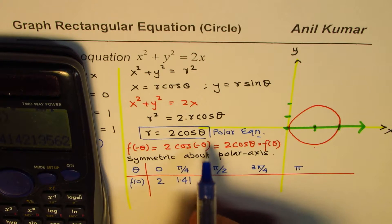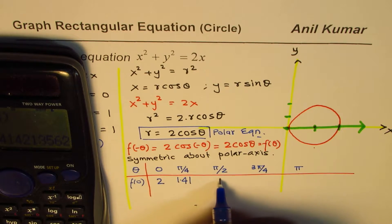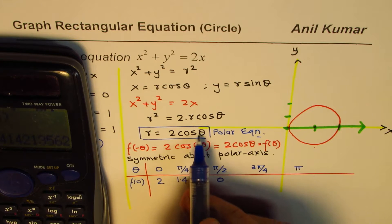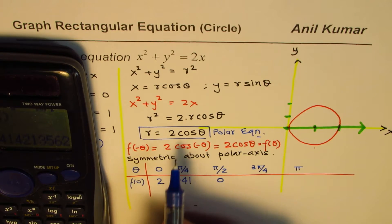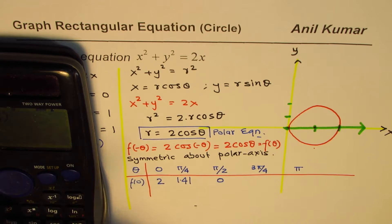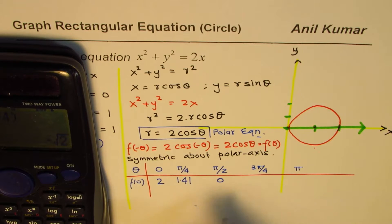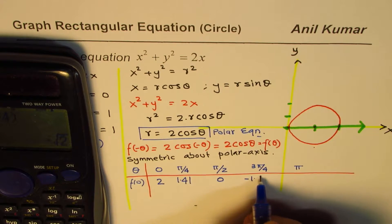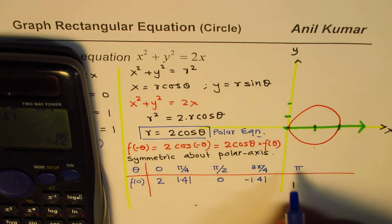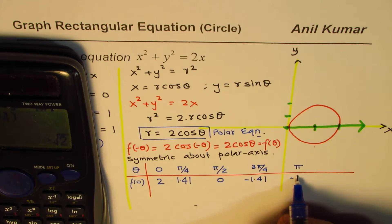At θ equals π/2, cos(π/2) is 0, so r equals 0. At θ equals 3π/4, r equals 2cos(3π/4), which gives approximately negative 1.41. And for θ equals π, cos π is negative 1, so r equals negative 2.